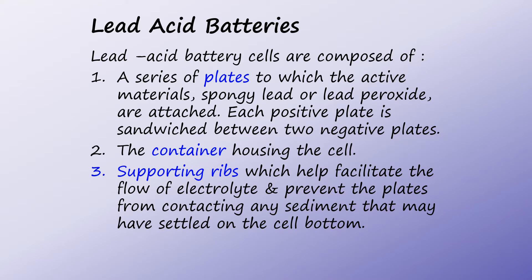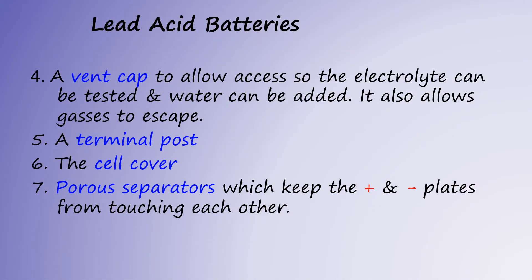Lead acid battery cells are composed of one, a series of plates to which the active materials, spongy lead or lead peroxide, are attached. Each positive plate is sandwiched between two negative plates. Two, the container housing the cell. Three, the supporting ribs, which help facilitate the flow of electrolyte and prevent the plates from contacting any sediment that may have settled on the cell bottom. Number four, a vent cap to allow access so the electrolyte can be tested and water can be added. It also allows gases to escape. Number five, a terminal post. Number six, a cell cover. And number seven, porous separators, which keep the positive and negative plates from touching each other.